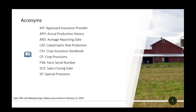Some acronyms you may hear me use today: AIP is the approved insurance provider — those are the companies that underwrite and pay claims. APH is actual production history — the production records over time. The ARD is the acreage reporting date. CAT is catastrophic risk protection, and that's the minimum level of coverage on a policy.